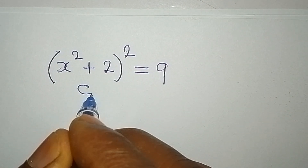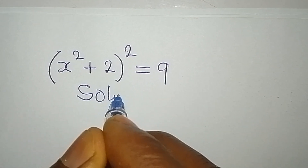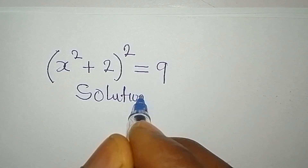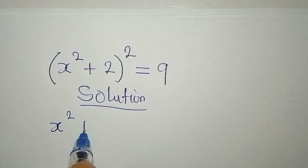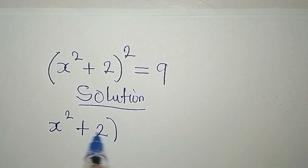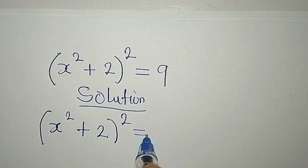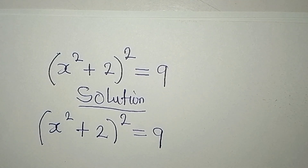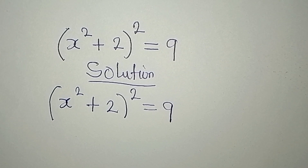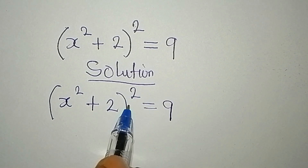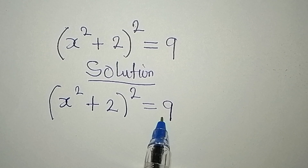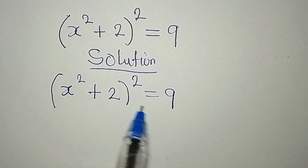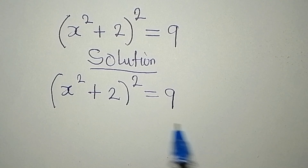Hello everyone, let's provide the solution to this problem: (x squared plus 2) to the power of 2 equals 9. There are a couple of ways you can solve this — one of them is to open the bracket by expanding the left hand side and equate to 9, or you can take the square root of both sides because of the square.